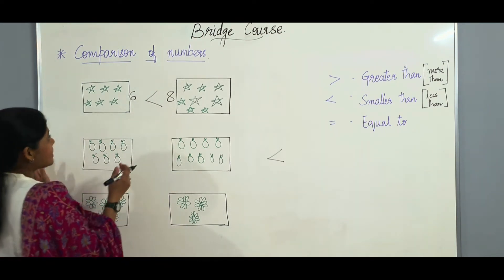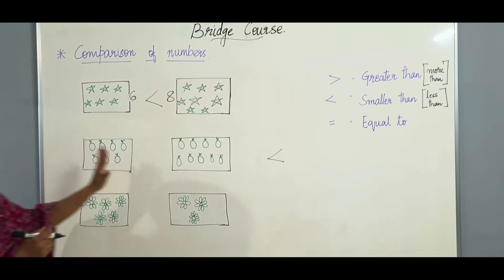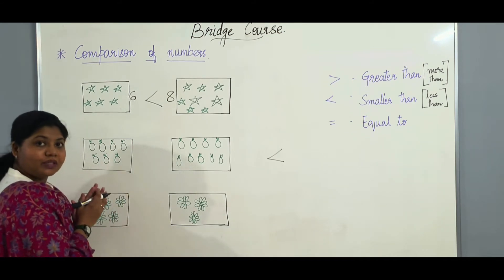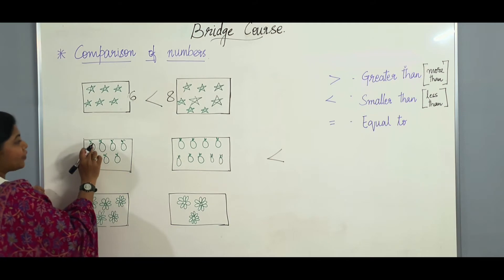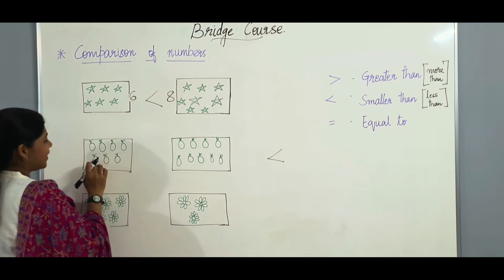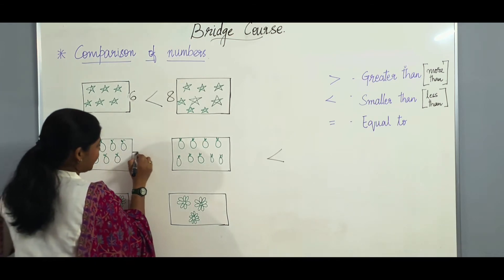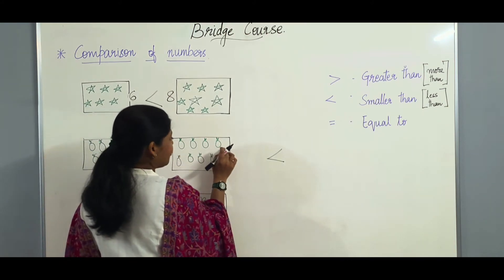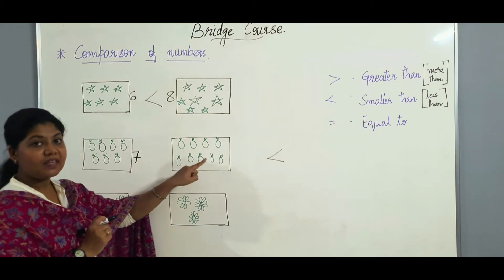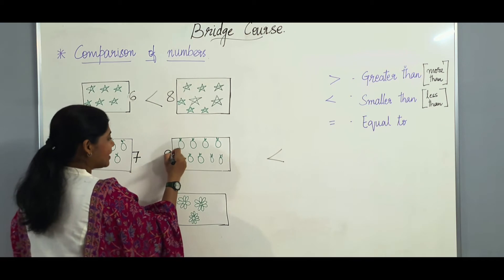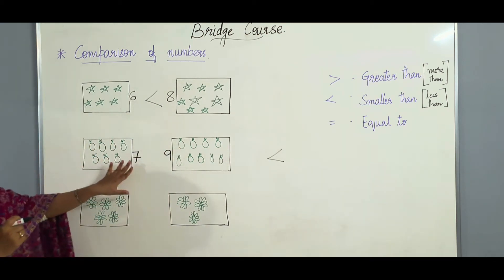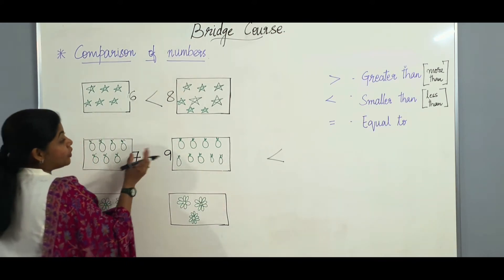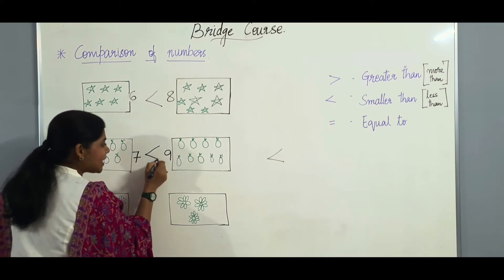Let us go to the next picture. Here on the left side we have a few oranges and on the right side also we have a few oranges. Let us compare these two sides. Here we have 7 oranges and on the right side we have 1, 2, 3, 4, 5, 6, 7, 8 and 9. So here we have 9 oranges. The right side has more, so the crocodile will be eating the right side of oranges.